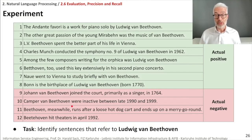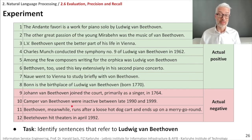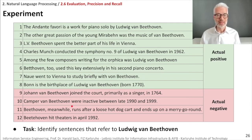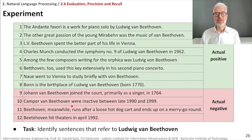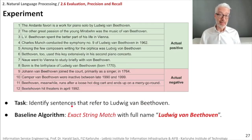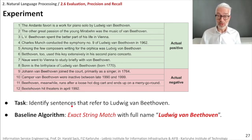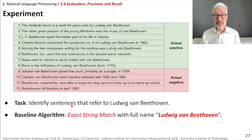We need a ground truth. The first eight sentences are truly about Ludwig van Beethoven. The last four are not: one refers to Johan van Beethoven — probably Ludwig's father — then Camper Van Beethoven, which seems to be a band, then 'Beethoven' the dog with a typo, and 'Beethoven hits theaters in April 1992' — that film. Now let's come up with a method. We start with a baseline algorithm — too simple for the task but gives us a baseline to improve on. We do exact string matching on 'ludwig van beethoven.'